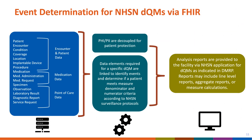Our presentation focuses on the processes taking place within the CDC Cloud environment as submitted data are used to create reports. Once data make their way to the CDC Cloud, analytics are applied to carry out event determination for NHSN DQMs. The FHIR resources, categorized roughly to contain encounter inpatient data, medication data, and point-of-care data, have PHI and PII decoupled for patient protection. Data elements required for a specific DQM are then linked to identify events and determine whether a patient meets measure denominator and numerator criteria according to the NHSN surveillance protocols. The data elements are then used to produce analysis reports — which may include line level reports, aggregate reports, or measure calculations — provided to facilities through the NHSN application as indicated in their DMRP.